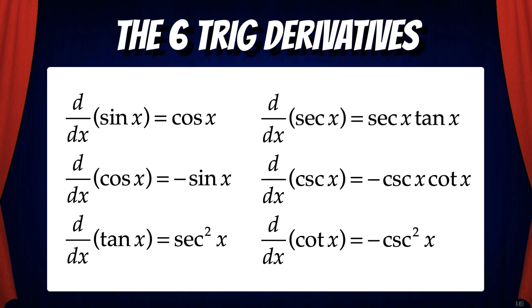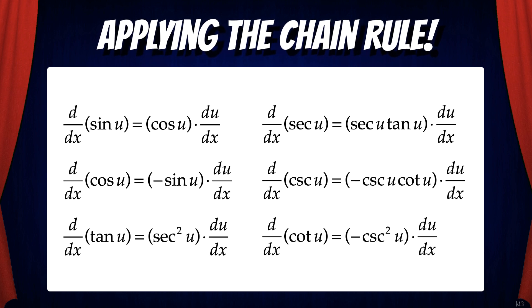For reference, here are the 6 trig derivatives that we discussed in the last video. Now we're going to take these to the next level where each function has an inner function that we're going to call u. So when taking the derivative of each of these, we need to multiply by du/dx because of the chain rule. For example, the derivative of sine u is cosine u times du/dx. The same pattern applies to all the other trig derivatives.